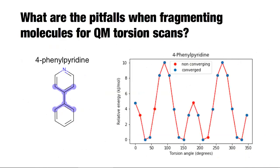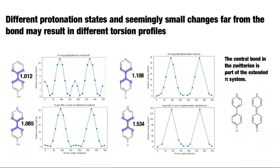Some pitfalls when fragmenting molecules: I'll walk through this biphenyl example. In this biphenyl molecule, we're looking at the central rotatable bond, and what I'm showing is a torsion scan of that central bond. As you can see, it's a rotatable bond — fully rotatable. But as you take this molecule and generate different protonation states for it, the torsion profile of that bond changes drastically.